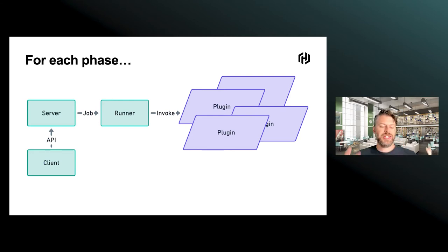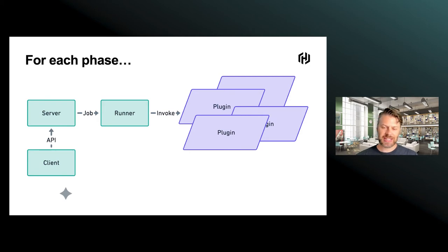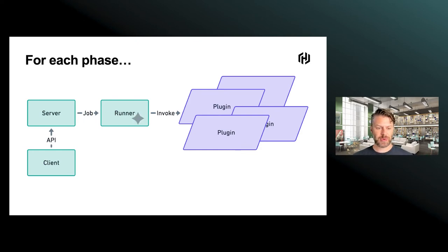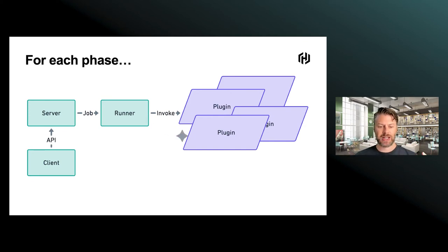For each phase, we've got something that looks effectively like this. You've got your client — your client's going to have something that needs to get done. It's going to go up to the server saying hey, I need to go do a build. That information is going to make its way over to the runner — hey runner, you need to go do a build — and that information about what actually needs to happen is going to get propagated down into the actual plugin.